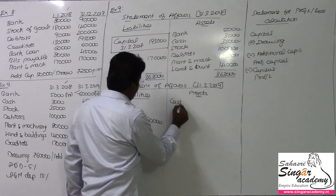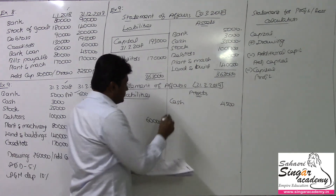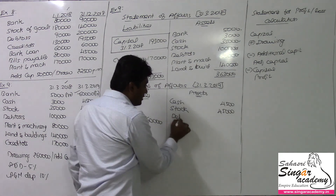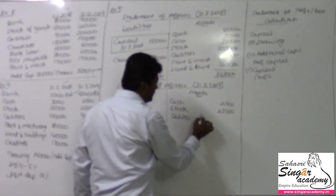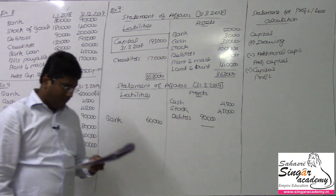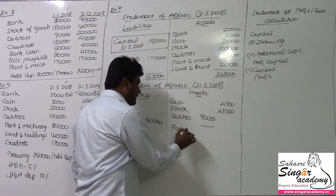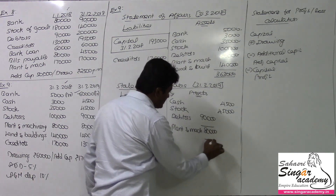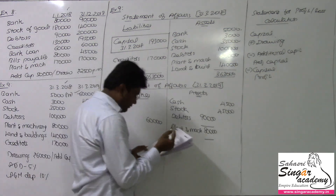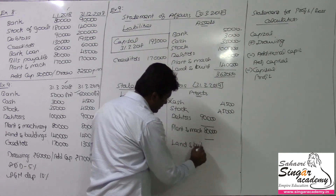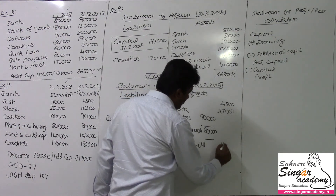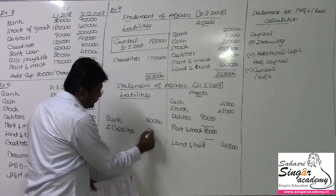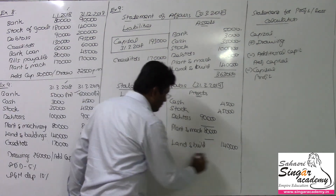Apart from that, other assets: cash 4,500, stock 45,000, and sundry debtors — provisions are there, so I write that value here for adjustments of the provision for doubtful debts. Plant and machinery — we have the adjustment for plant and machinery also, value in the inner column being 80,000 rupees. Land and building — we don't have any adjustments for land and building — value being 1,40,000. Sundry creditors should be on the liability side, value being 1,30,000.